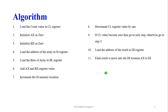Now we are going to write the algorithm. First, load the count value in the CL register. CL is the count register, which is why we load the count value there. Initialize AX as zero so the AX register's value becomes zero. Initialize BX value as zero as well. Then load the address of the array in the SI register. Next, load the byte of the array into the BL register, then add the AX and BX registers. Increment the SI memory location — initially the value is 1000, then it becomes 1001.